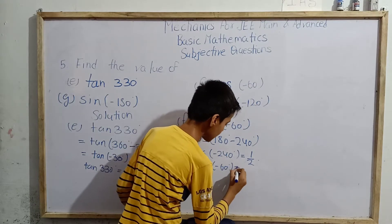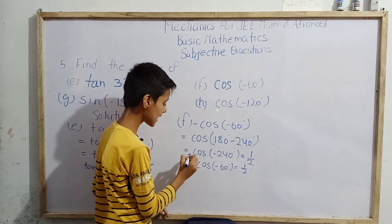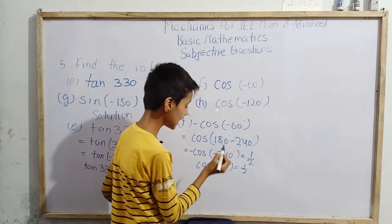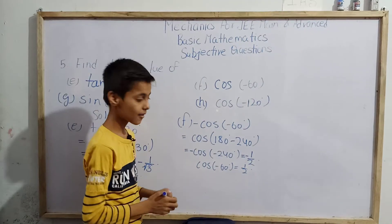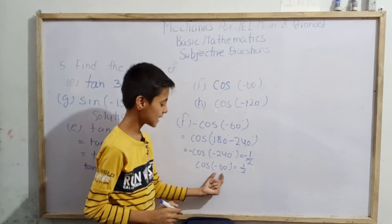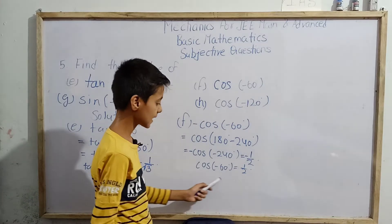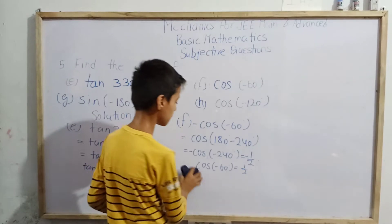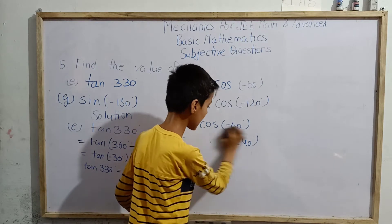Evaluating cos(-240°): its value is 1/2. Since cos(-60°) = cos(-240°) and cos(-240°) = 1/2, we get cos(-60°) = 1/2. That is the answer for part f.